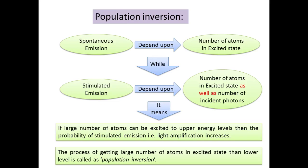As we excite electrons by giving energy from incident photons, the more energy you supply, the larger number of atoms will go into the upper energy level. In return, the probability of stimulated emission — that is, light amplification — increases. The process of getting a large number of atoms in the excited state compared to the lower level is called population inversion.